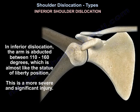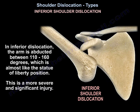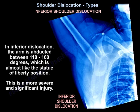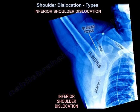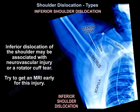In inferior dislocation of the shoulder, the arm is abducted between 110 and 160 degrees, which is almost like the Statue of Liberty position. This is a more severe and significant injury. Inferior dislocation may be associated with neurovascular injury or a rotator cuff tear, so try to get an MRI early for this injury.